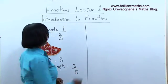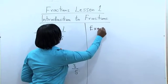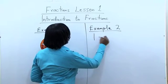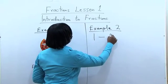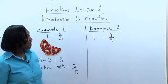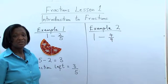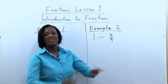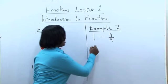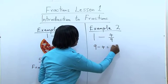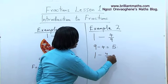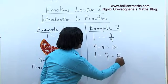Let's look at another example: one minus four over nine. Very simple. You don't need so much calculation. If a whole has been divided into nine parts and four parts have been taken, what is left? We know that nine minus four is equal to five. So one minus four over nine is equal to five over nine.